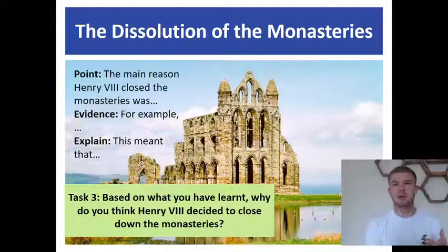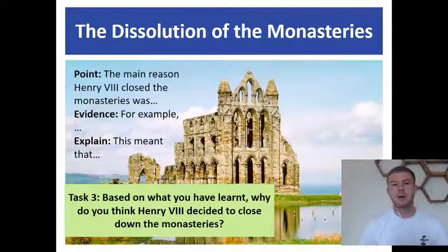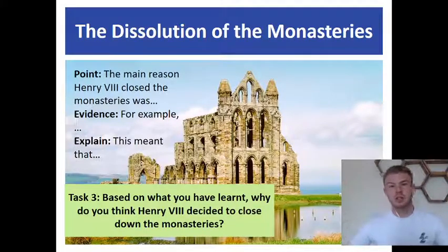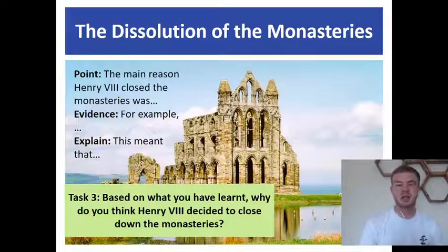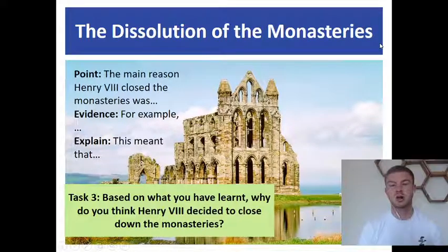Then give your evidence. For example, you could talk about nuns being pregnant or monks getting drunk to show corruption. For evidence of money being important, you could mention that he sold off the relics found in the monasteries, or that he used the lead from the roofs to create gunshot for his war with France. Then you need to explain the consequences of that action — for example, this meant Henry was able to start his war with France, or that he was able to strengthen his new Church of England. In that explained section, show that you really understand what the consequences were of the decision to dissolve the monasteries.